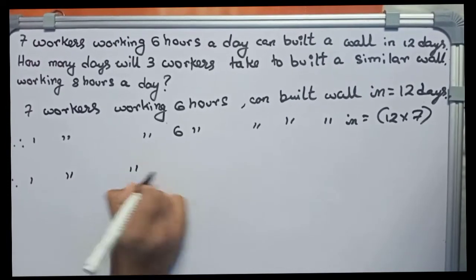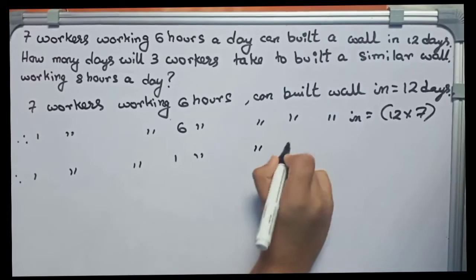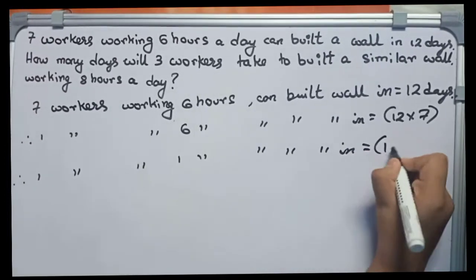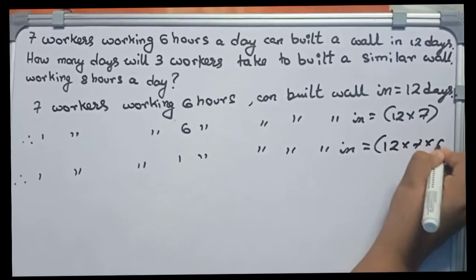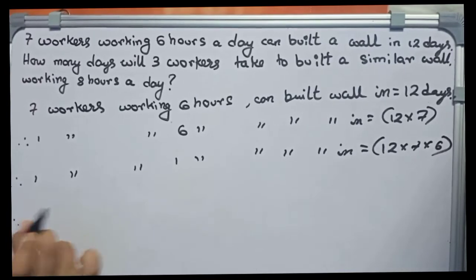Now therefore, I find one worker working one hour a day can build the wall in - definitely it will take more time - it will become 12 into 7 into 6. So now I find out, therefore, as given in the question.